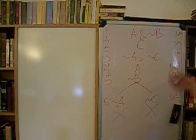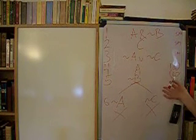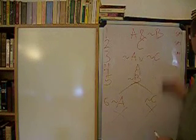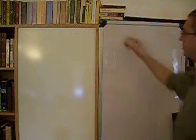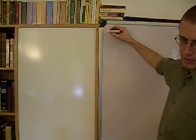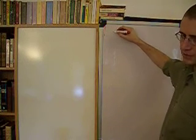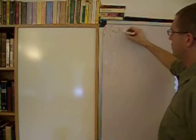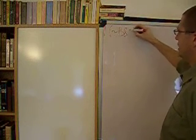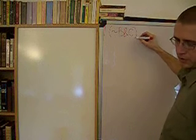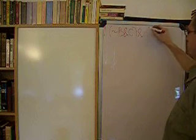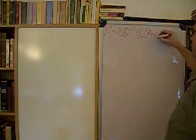The next sentence we'll do is in parentheses not B and C, parentheses ampersand parentheses, A or B. So B fails and C obtains, and either A or B obtained.